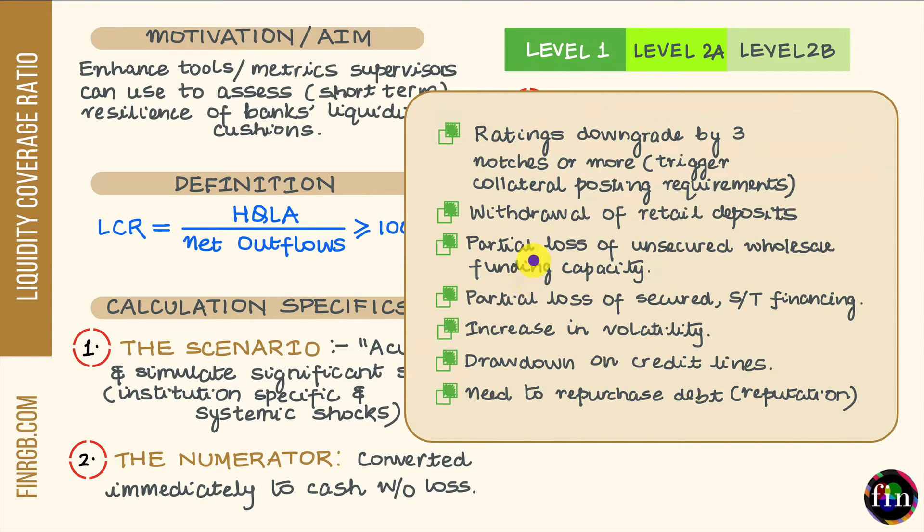In this scenario, we're talking about partial loss of both unsecured wholesale funding capacity as well as secured short-term funding capacity which comes from certain types of collateral and counterparties. We're also talking about a marked increase in volatility which drives up margin/collateral requirements, both on account of increase in potential future exposure for derivatives transactions and also the revision upwards of haircuts assigned to securities used for collateral.